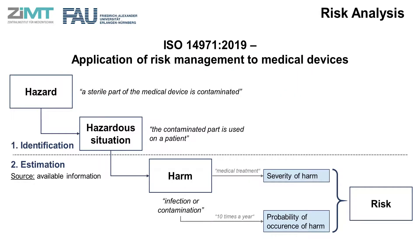Once the risk management plan is established, the step of analyzing risks can begin. The common approach starts with the identification of hazards and hazardous situations. For example, a hazard can be that a sterile part of the medical device is contaminated, which may result in the hazardous situation that the contaminated part is used on a patient. The associated harm and risk must next be estimated — in this example, the harm could be infection or contamination. The occurrence probability and severity of this harm have to be estimated with respect to the particular medical device, using available information and data, such as field data from an equivalent device. You might estimate that infection occurs approximately 10 times a year and usually requires medical treatment.